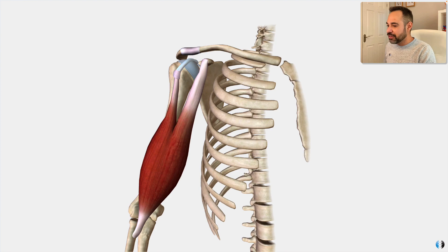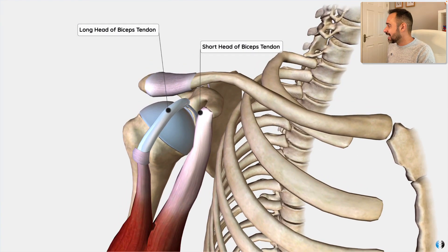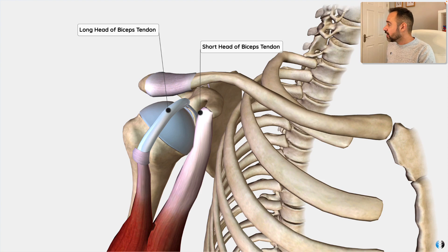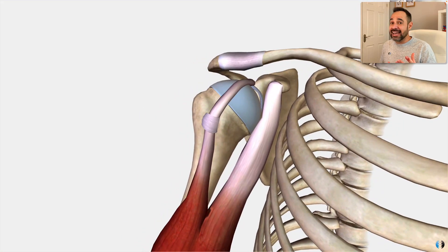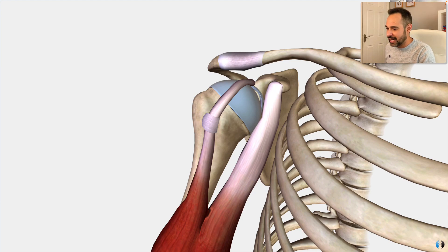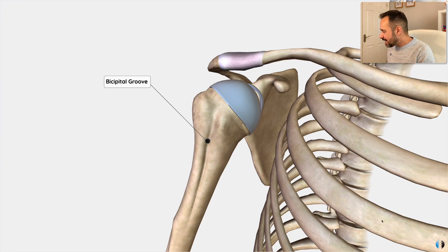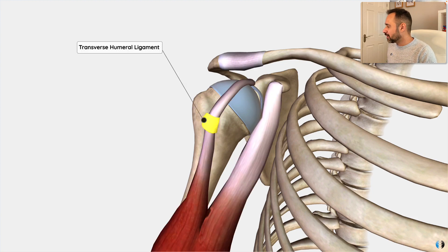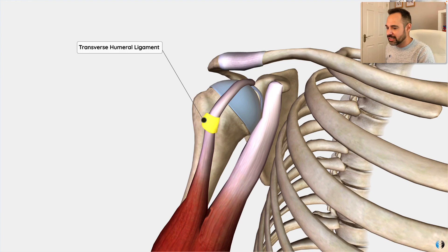This muscle has two heads - a long head and a short head. We're going to touch upon the long head of biceps first, and then we'll move on to the short head. The long head is longer because it travels over a slightly longer distance than the short head. We can see that it runs through the bicipital groove, which is a small indentation in the proximal humerus. The tendon is kept in place by the transverse humeral ligament, so this tendon sits in a nice little groove kept snug by the position of this ligament.